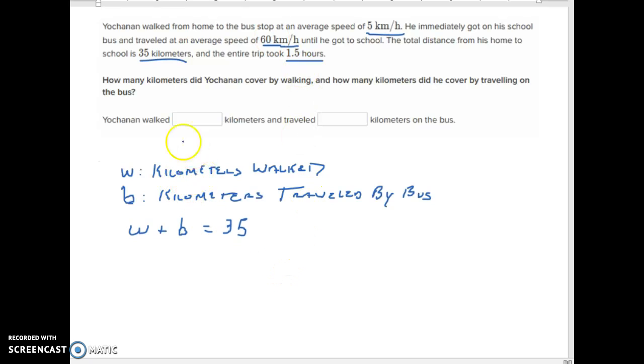This is how far we've gotten so far. We are going to call W kilometers walked and we're going to call B kilometers traveling on the bus.